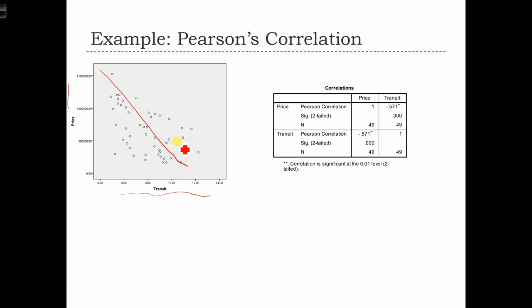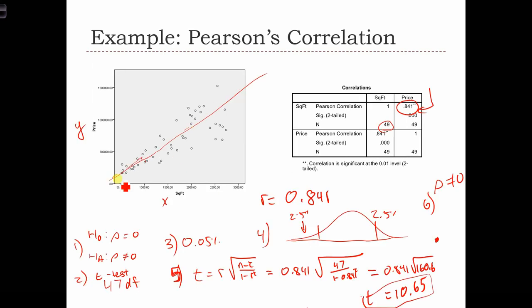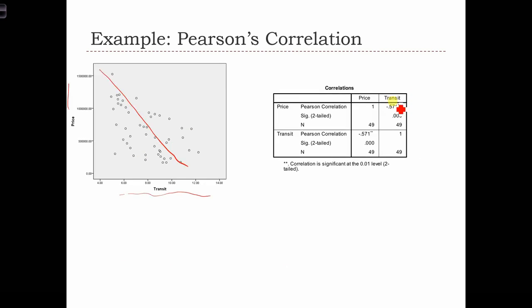These points tend to scatter away from this main dominant trend line to a larger extent than, say, these points over here scatter from its trend line. So we would call this moderately negative correlation.